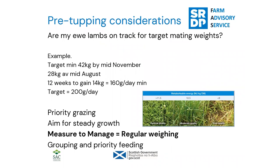In terms of pre-tupping considerations, can you get lambs to weight in time? Targeting 42 kilograms minimum for a 70 kilogram mature ewe, if you're at mid-August with lambs averaging 28 kilograms and tupping in mid-November, that's 12 weeks to gain 14 kilos — a minimum of 160 grams per day. But realistically, given the spread in weights, the lighter lambs need more, so you're targeting around 200 grams per day, which does involve priority feeding on good pasture.